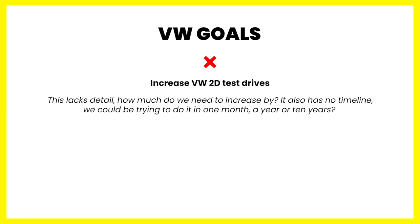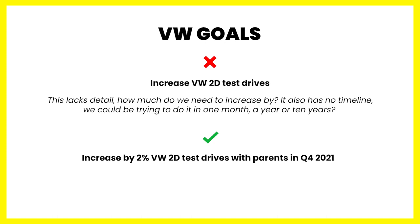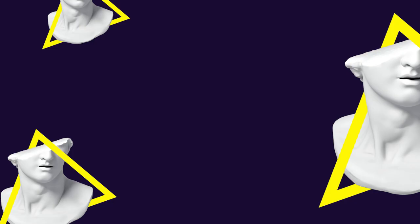A bad way to write the VW goal would have been 'increase VW's two-door test drives' — this lacks detail. How much do we need to increase it by? It also has no timeline. Now let's look at how to write it properly: 'Increase by 2% VW's two-door test drives with parents in Q4 2021.' This is specific — we know by how much and we know it's with parents as the target consumer. We know how to measure it, it is hopefully achievable within the budget, it's relevant as advertising can get them to test drive, and it's timely as it has to be done by Q4 2021.